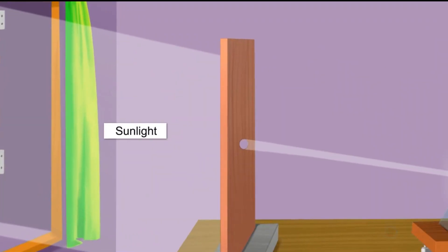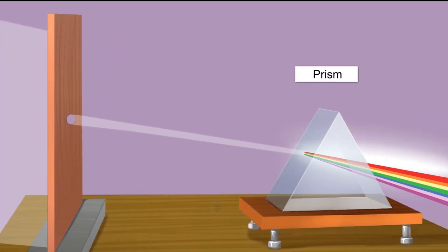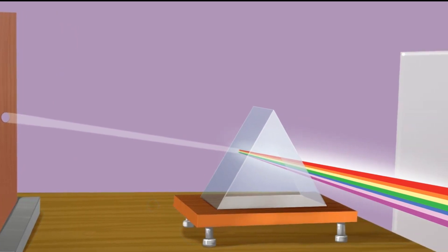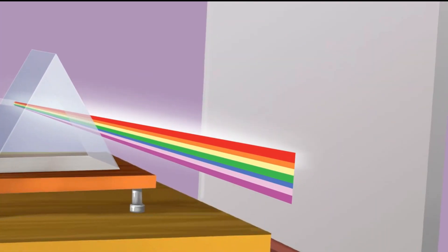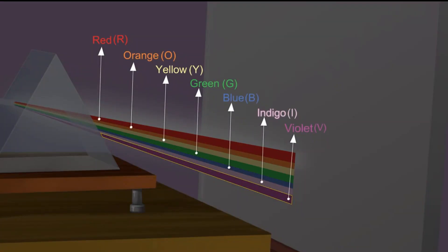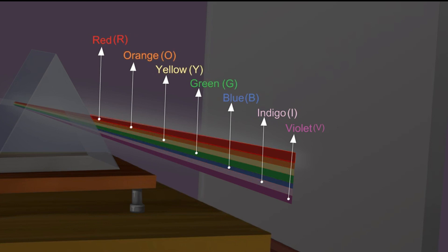The sun makes a rainbow when white light passes through raindrops. The raindrops act like tiny prisms. When sunlight passes through a raindrop, it bends and scatters into a band of colors. This can be reflected back to you as a rainbow.